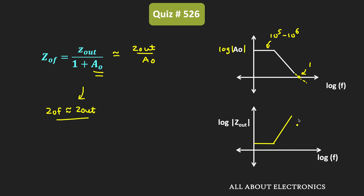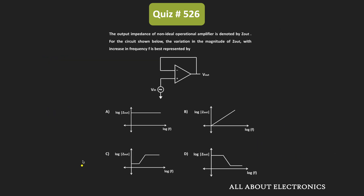On this graph, beyond the unity gain frequency, this output impedance is equivalent to Zout. So if we see the graph of output impedance with frequency, this is how it will look. Therefore, for the given question, this is the correct answer.